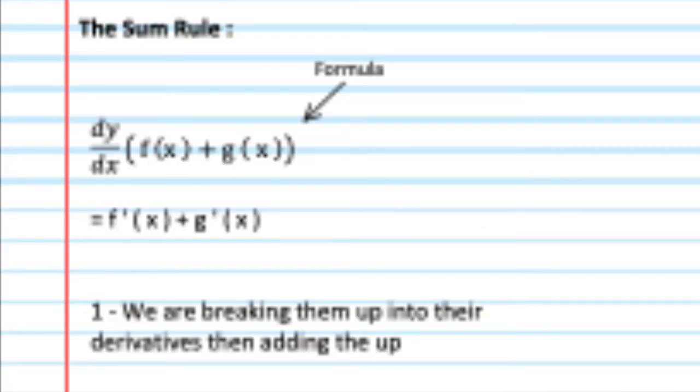So for the sum rule, or in most rules really, we're technically just breaking them apart. And then depending on the rule, we're either adding, subtracting, multiplying, or dividing. Those are the four common rules that we have taken in class.